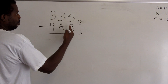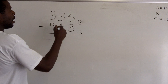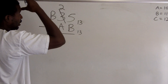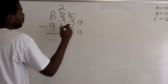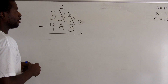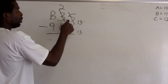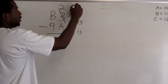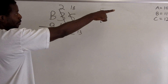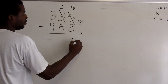B is 11. I can't take 11 away from 5, so I have to borrow. I borrow one from the next column, which becomes a 2. I add 10 base 13 to the 5, and 10 base 13 is actually the number 13. 13 plus 5 is 18. So I now have 18 minus B, which is 18 minus 11, and 18 minus 11 is 7.